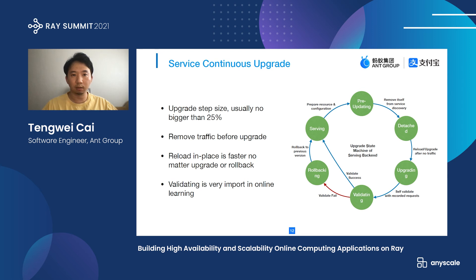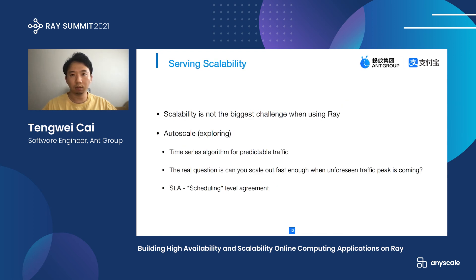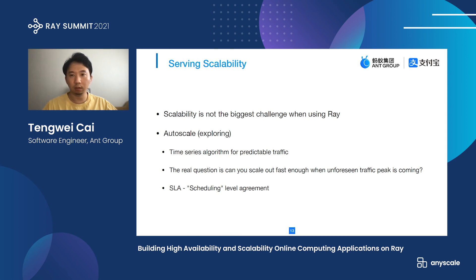Now, Ray is excellent at scaling, so scalability is no longer the most significant challenge when using Ray. However, we have done some work to enable users to scale their service with our API. The real problem we are facing is the auto-scale feature. We can use a time series algorithm to analyze predictable traffic, but when an unforeseen traffic peak comes, can we scale out fast enough to serve? We must know our cluster capacity very well and may need to clear low-priority actors for high-priority ones. These are areas we are still exploring.